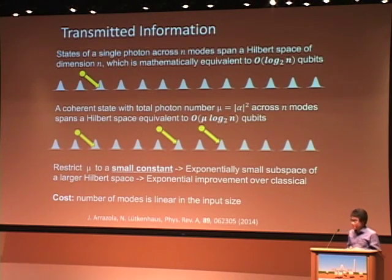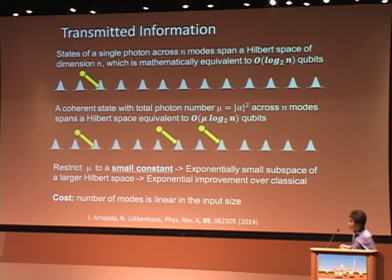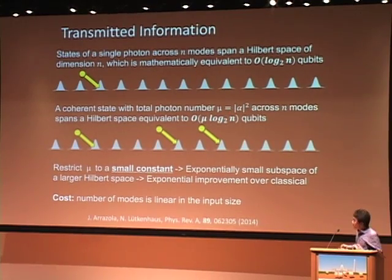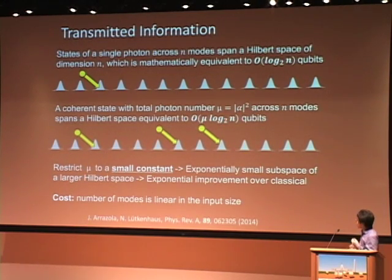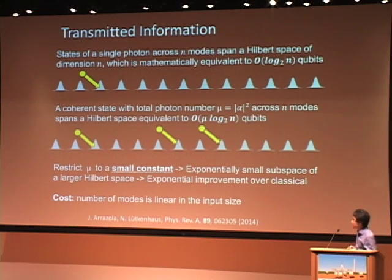Let's understand the transmitted information. A single photon across n modes is mathematically equivalent to log n qubits — similar to the high-dimensional QKD idea. If we have a coherent state with total mean photon number mu, then mu across n modes is equivalent to mu times log n qubits. The idea of this protocol is to keep the total photon number to a very small constant, so we can still have this exponential improvement. The cost is that the number of modes is linear in the input size, meaning we need more optical pulses.